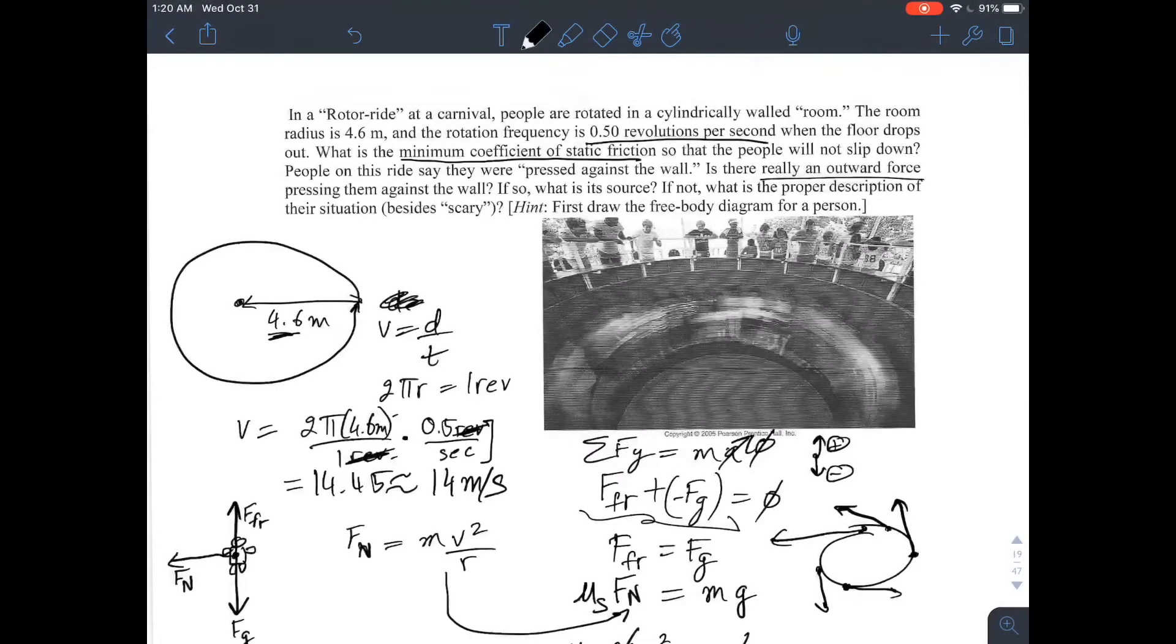No, there is not a real outward force pressing them against the wall. There's nothing pressing them against the wall. It's just the direction change in the tangential straight line path that all mass wants to follow. So, the direction is changing fast and you just feel like you're pressed up against the wall. Yeah, so what's the source? Inertial path. The need of all mass to follow its inertial path is what the source of that feeling is.